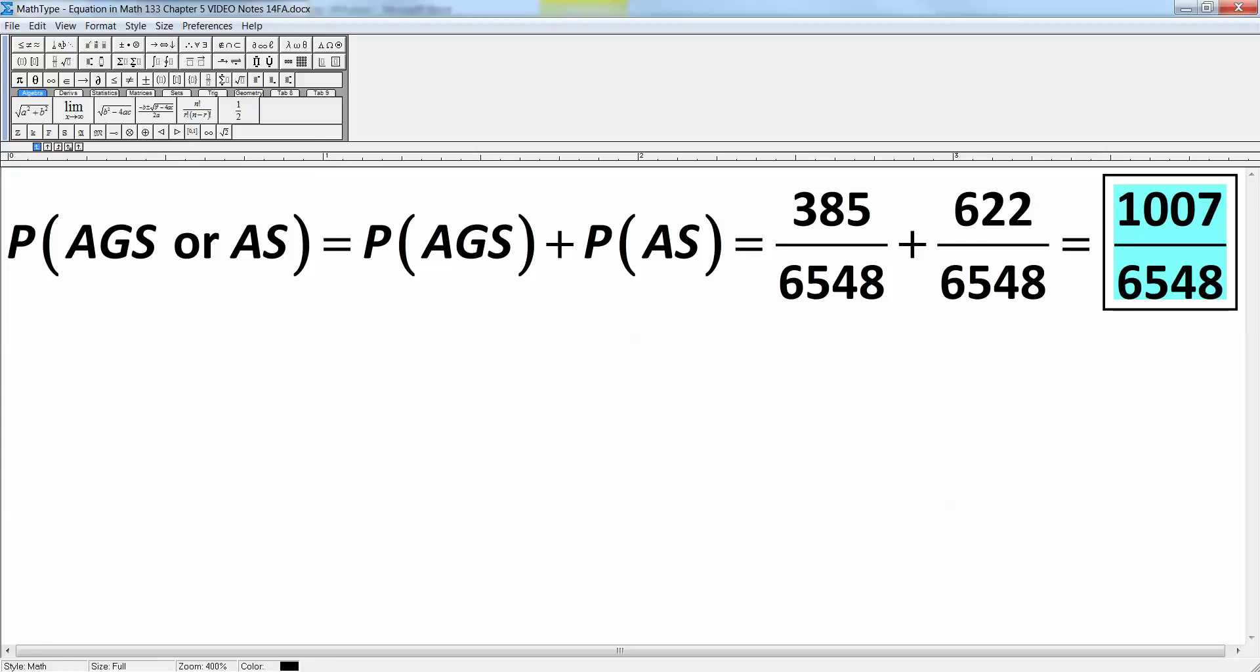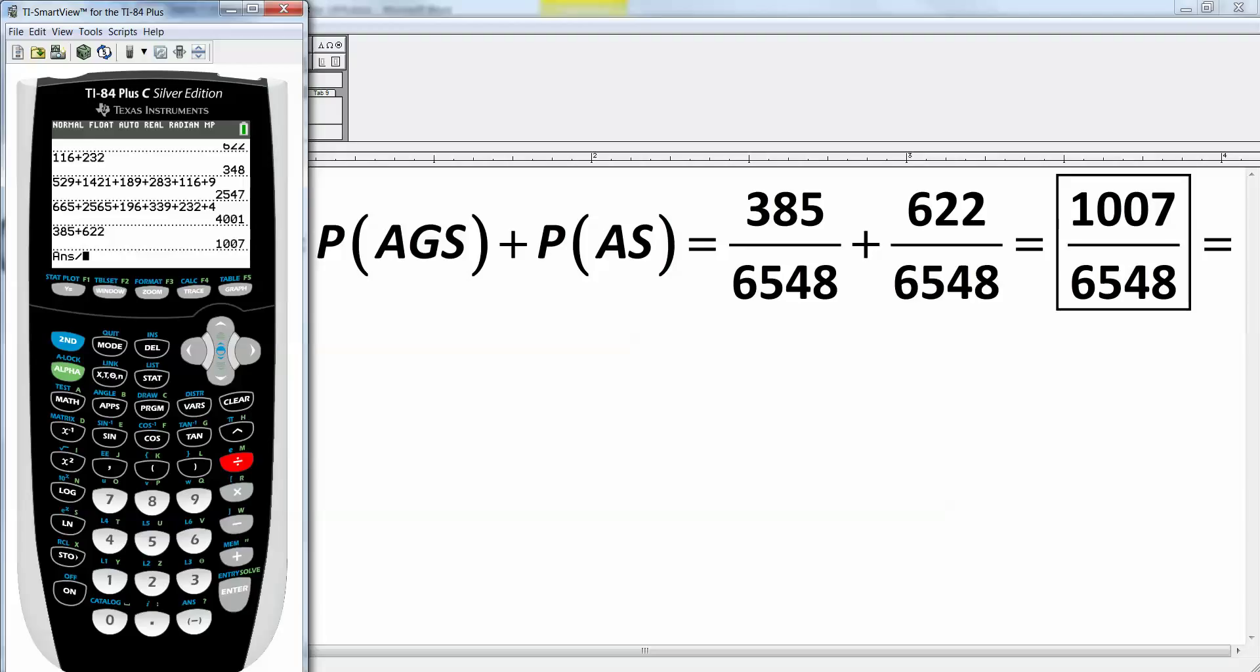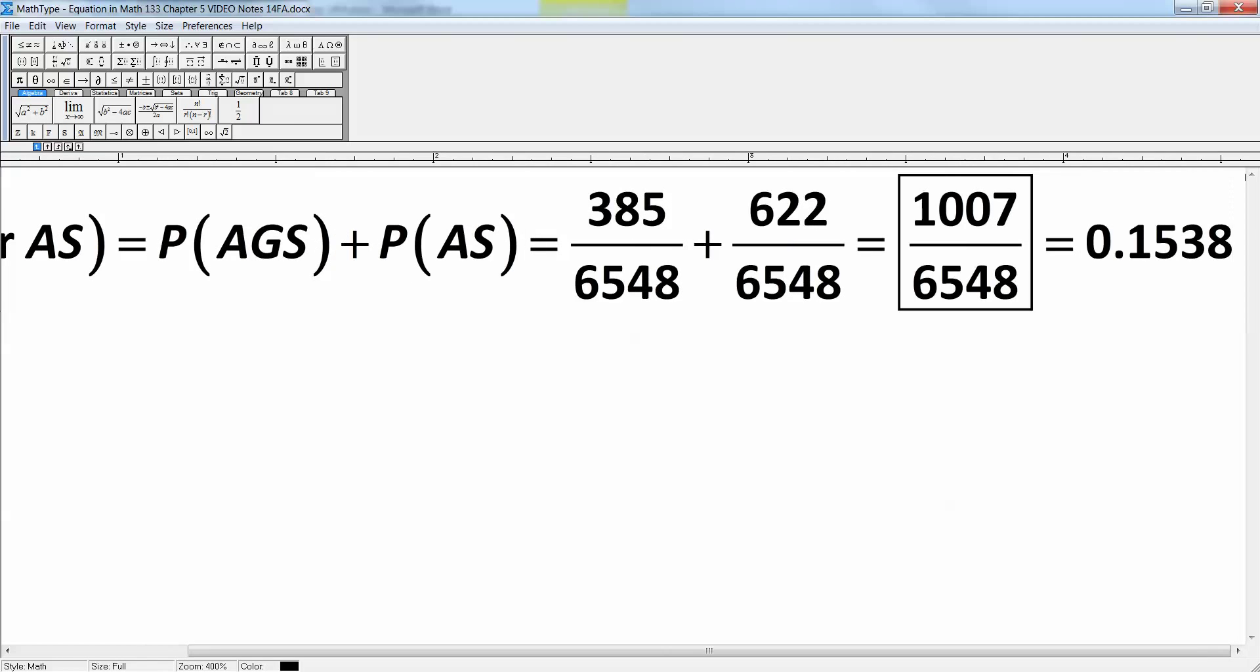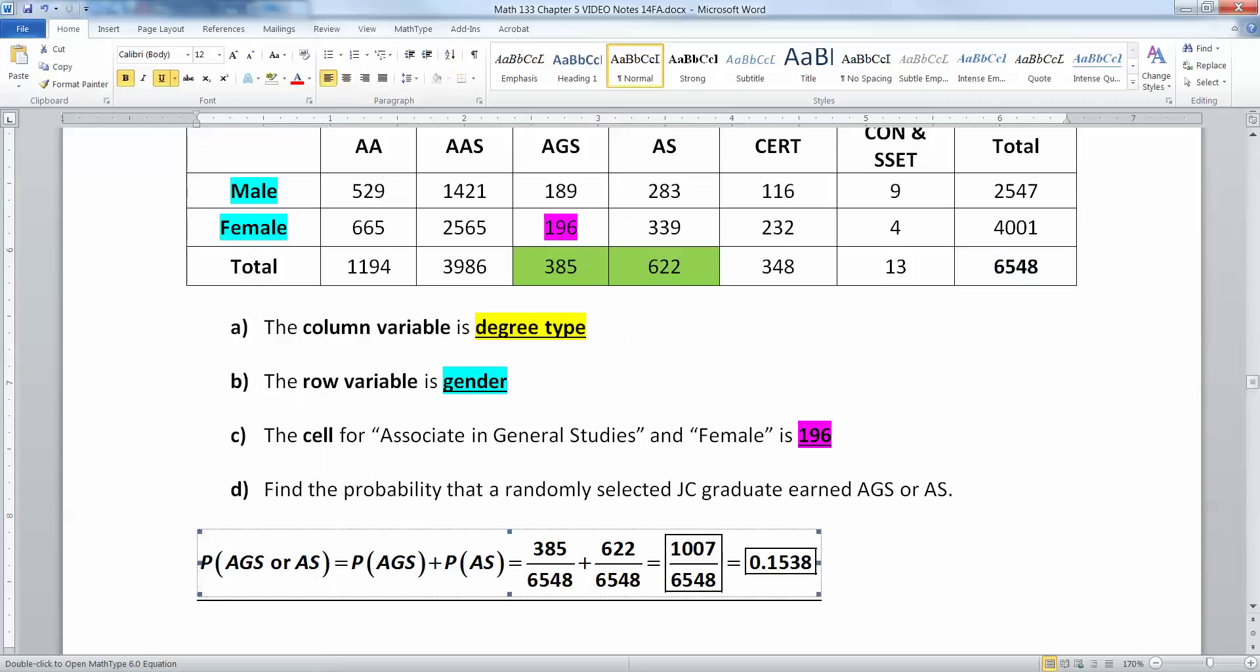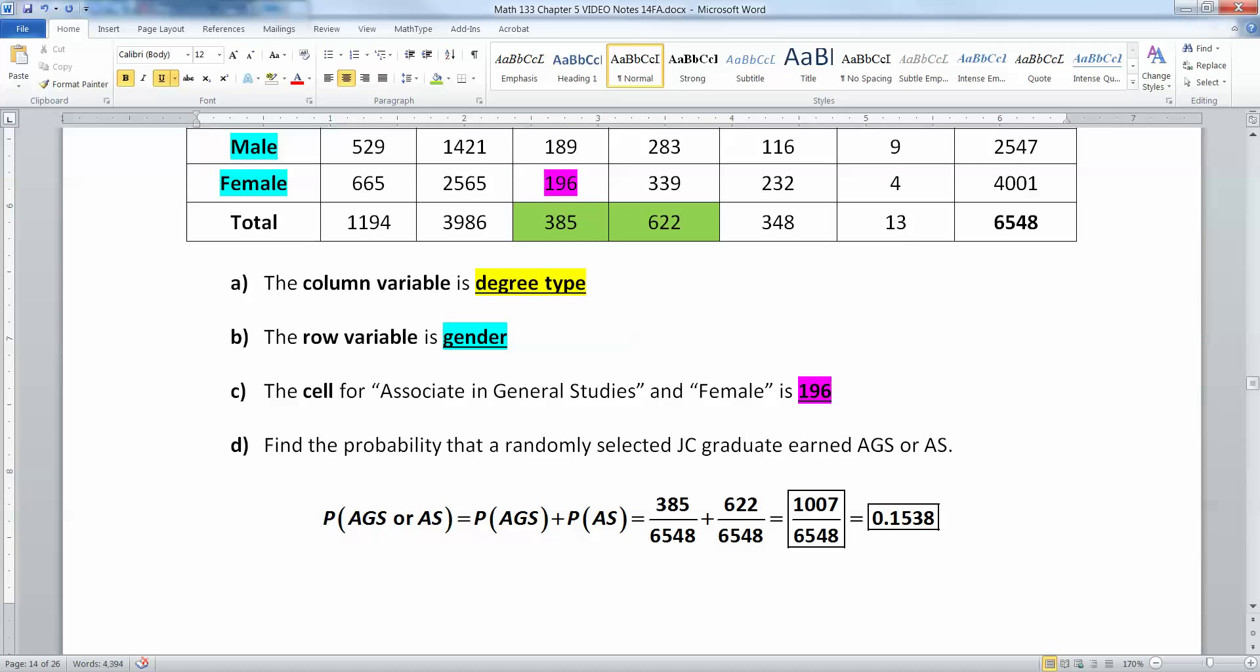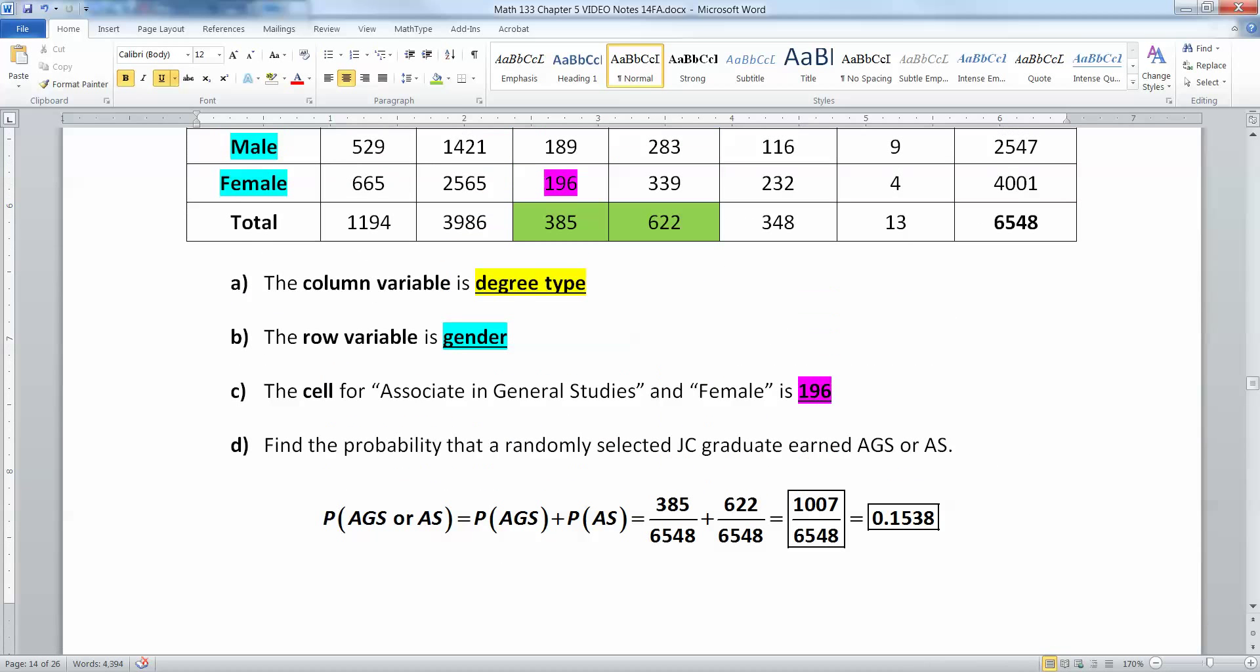And there you have it. If they want a decimal, then you can do that by saying equals and then find what that number is with your calculator. Take 1007 and divide it by 6548 and you get 0.1538. The next example is a little bit long and I'm worried about getting it in the three minutes that I have left in this video. So I'm going to stop right here and I'll pick it up at the next video with the two six sided dice example.